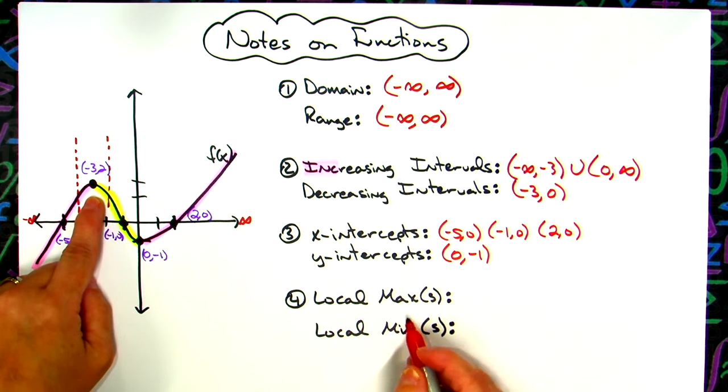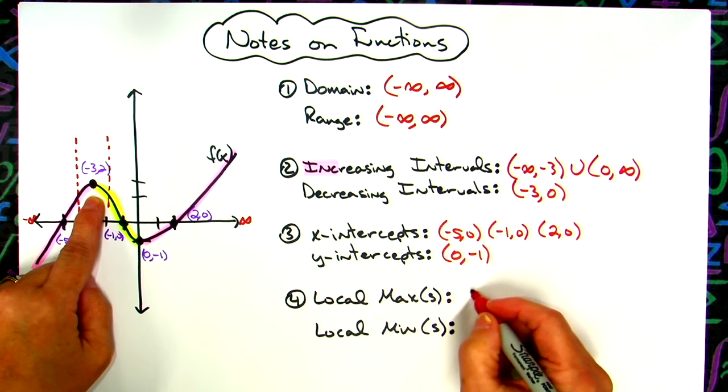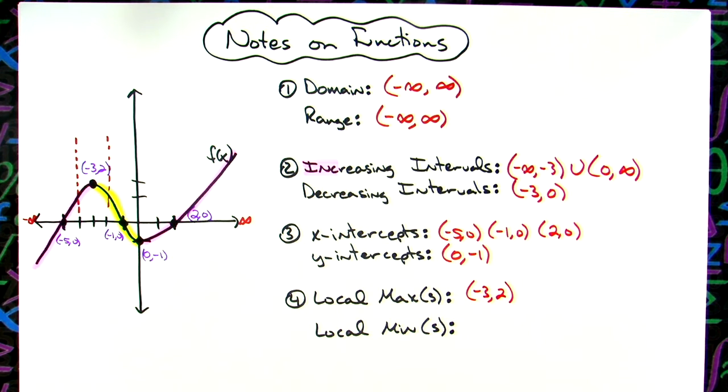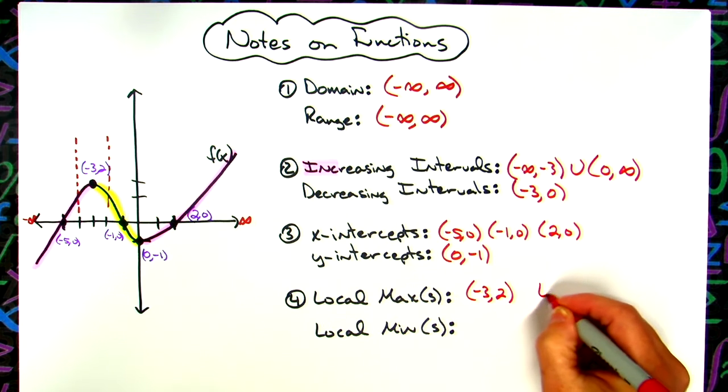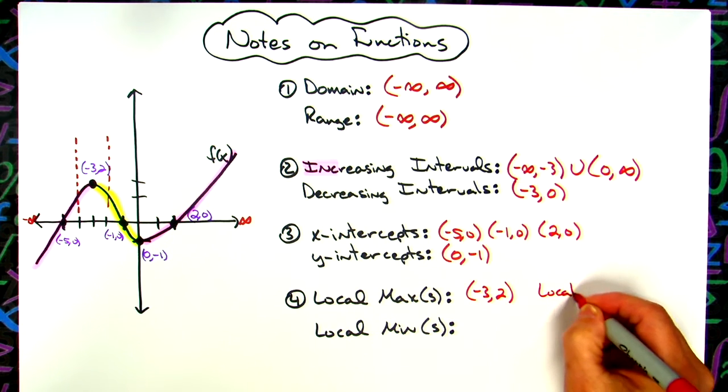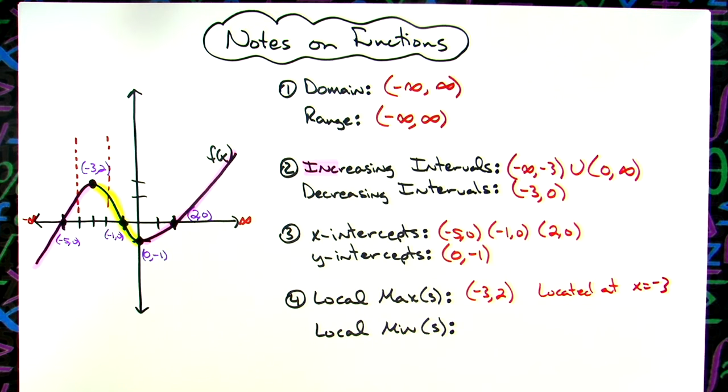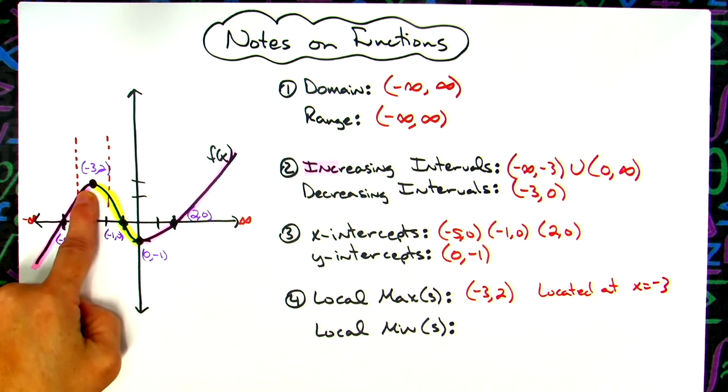So the local max is written, can be written as an ordered pair of negative 3, 2. Some textbooks will tell you that it is located at x equals negative 3. But the actual local max when you want to list it as an ordered pair is that point right there.